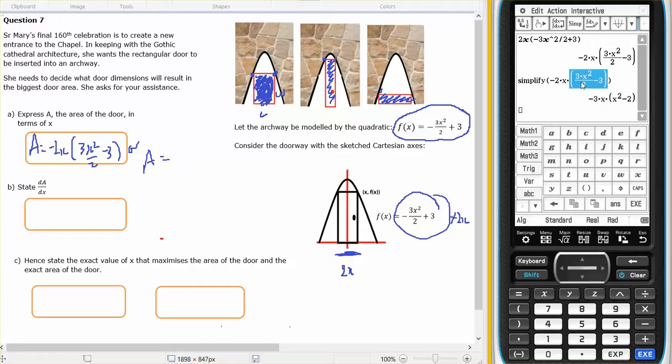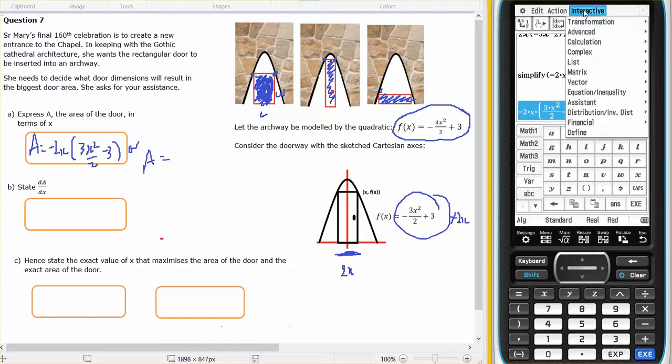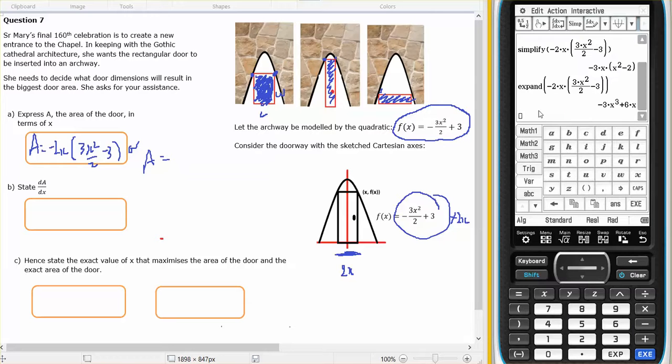Maybe I should use expand, not simplify. And there we go, minus 3X cubed, plus 6X.